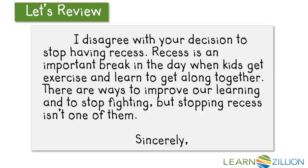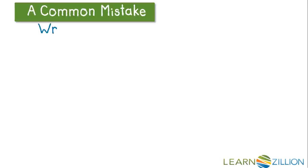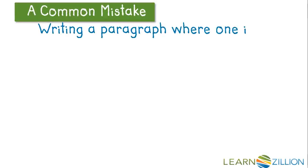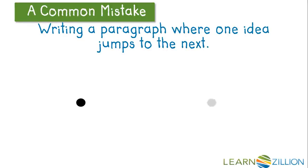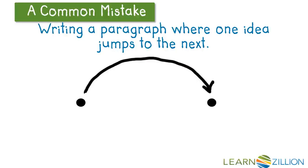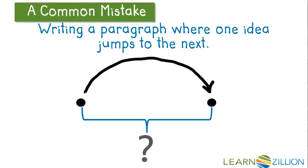We're now going to try to connect related ideas in these paragraphs. A common mistake when writing is writing a paragraph where one idea jumps to the next. In one sentence, the subject might be the zoo. The next sentence could be a movie about lions. How do they connect to each other? Ideas need to be connected so that sentences can flow from one to the next.